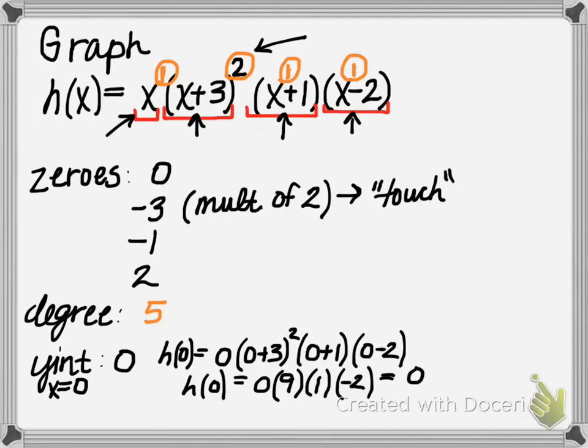And the last thing before we actually go to a graph is to think about the end behavior of this polynomial. So we've already said that it's a degree of 5. So odd degrees tell us that the ends of the graph are going to point in opposite directions.